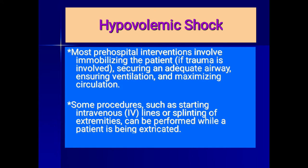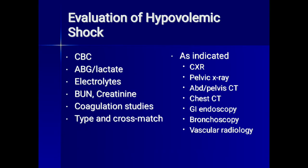Hospital interventions involve immobilizing the patient if trauma is involved, securing an adequate airway, ensuring ventilation, and maximizing circulation. Evaluation includes CBC, arterial blood gases and lactate levels, electrolytes, kidney function tests, coagulation studies, and blood grouping and cross-matching. As indicated, imaging may include chest x-ray, pelvic x-ray, abdominal/pelvic CT or sonography, chest CT, GI endoscopy, bronchoscopy, and vascular radiology.